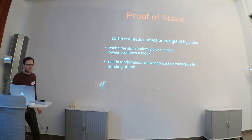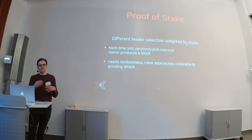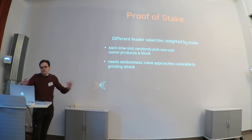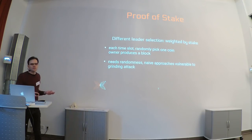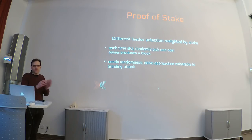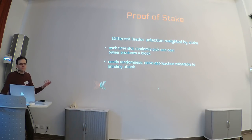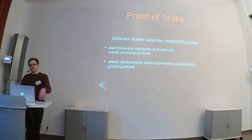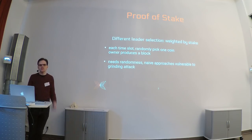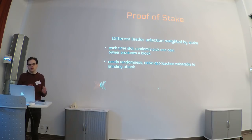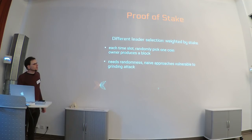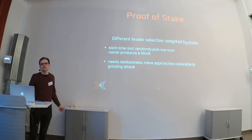In proof of stake, the resource you must acquire to get election rights is the currency itself — it's visible on the blockchain and is the point of running a cryptocurrency blockchain. You have a finite number of tokens. Every time a new block needs to be created, you randomly pick one of those tokens, and the owner — the one who holds the cryptographic key that can sign transactions for it — is eligible to produce a new block. This removes the huge energy cost.